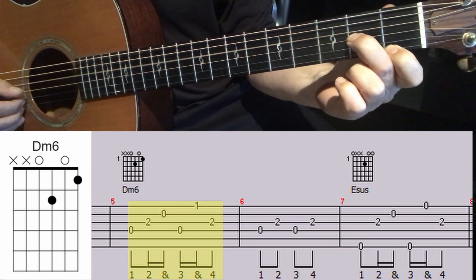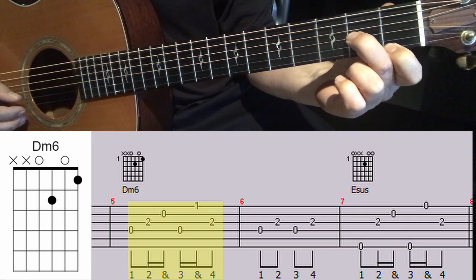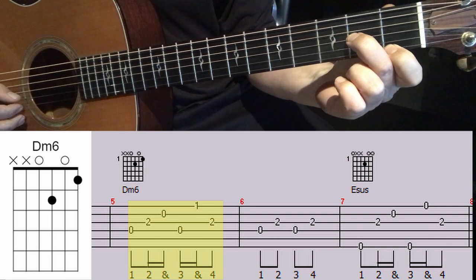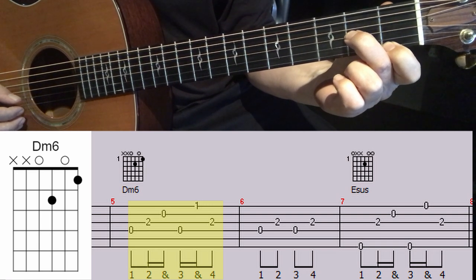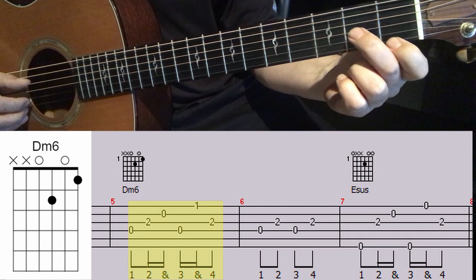And it's counted like this: one, rest, two, and three, and four, rest. It's the same pattern that we had in measure three. So if you got that pattern down from the Breeze song, it's the same pattern. We're just plucking different strings and playing some different chords.